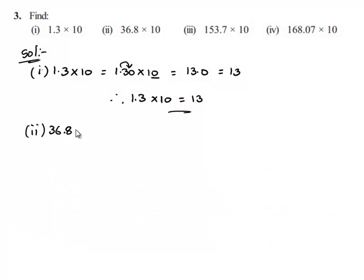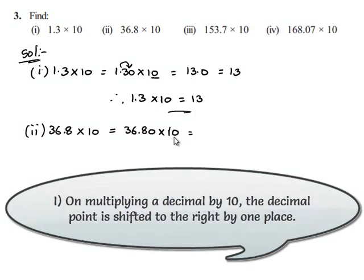Take down the second one: 36.8 multiplied by 10. This can also be written as 36.80 multiplied by 10. Here we can observe that 1 is followed by only one zero in 10. Therefore the decimal point moves one digit to the right. This gives 368.0, which can also be written as 368.